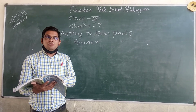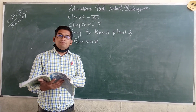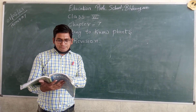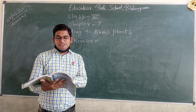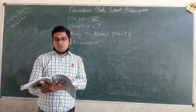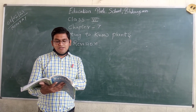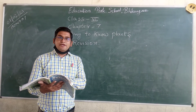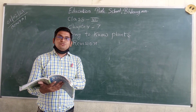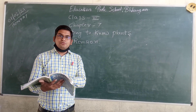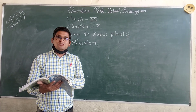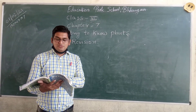You have to name two trees, two shrubs, two herbs, and two creepers found in your house, school, or surrounding area. This is your homework. Thank you.